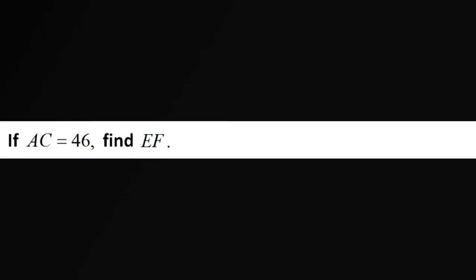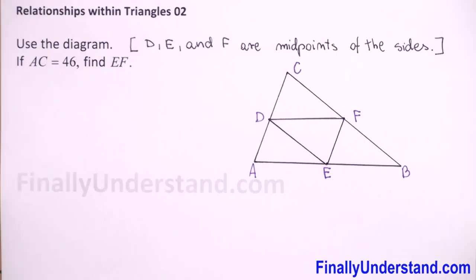We have given a diagram. On this diagram we have a triangle and we have given also that D, E, and F are the midpoints of the sides.